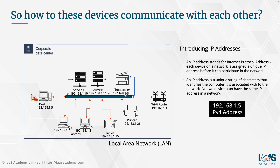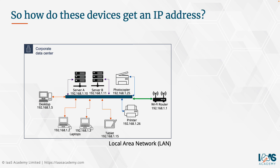You might be wondering how these devices get their IP addresses. There are really two ways to do it. You can either physically log on to each computer or server and statically assign the IP address using a network application that configures the network card installed in that device. This involves logging onto the machine, bringing up the network configuration application and providing the necessary information such as the IP address, subnet mask and default gateway. But it means you have to go around each and every computer and manually configure it with this IP information.